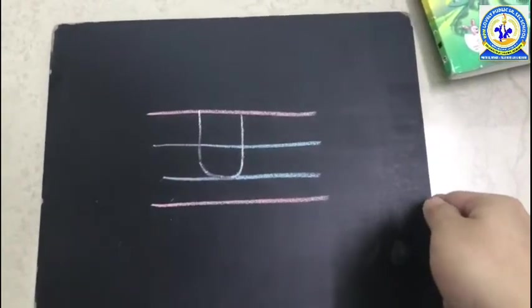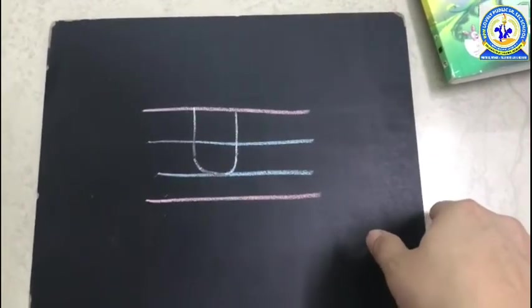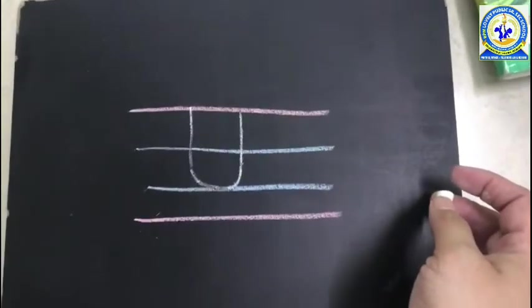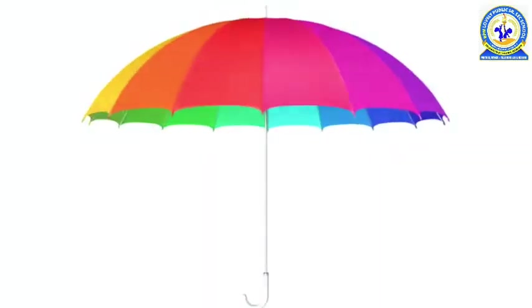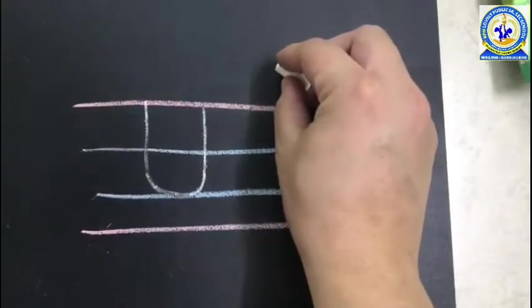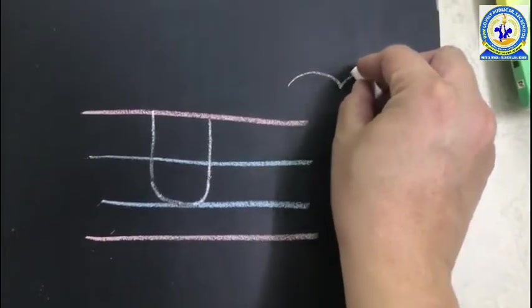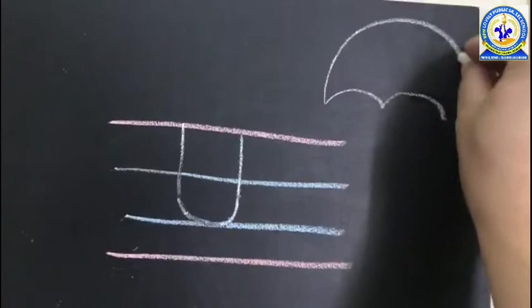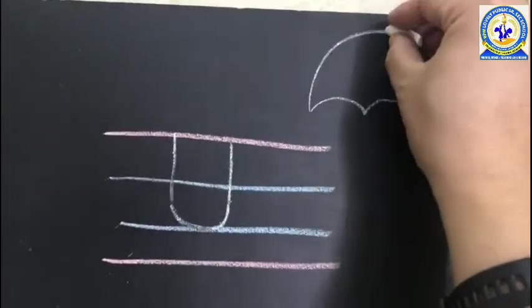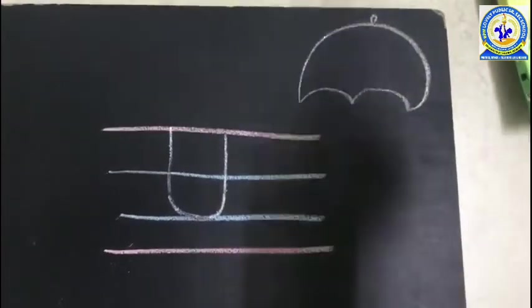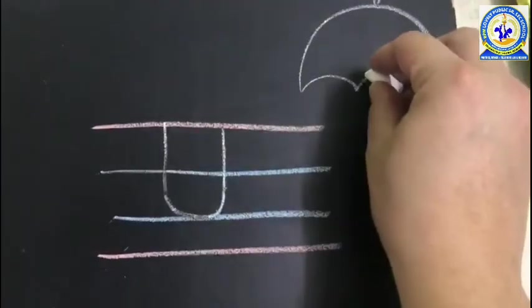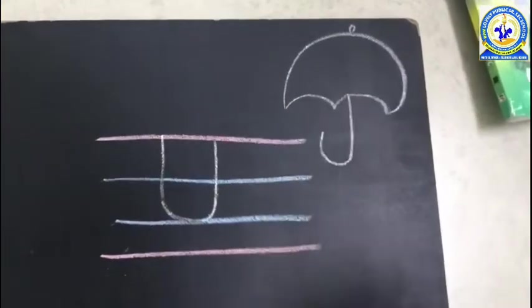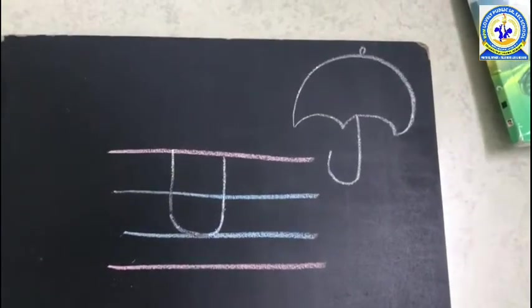What sound does letter U have? A and U. It has two sounds. First we will make an umbrella. Make a curve down, another curve down. Now join the two ends. Make a small circle on the top, a stick below, and turn. This is an umbrella.